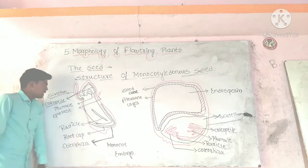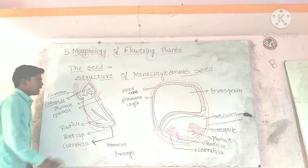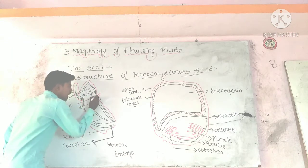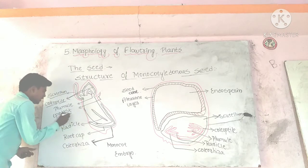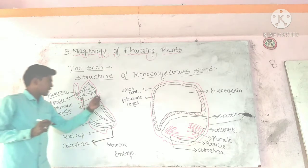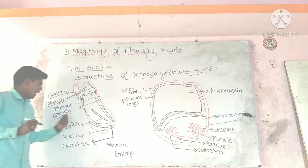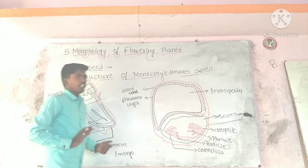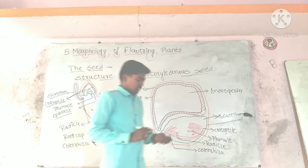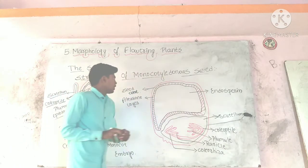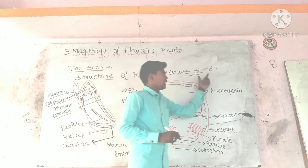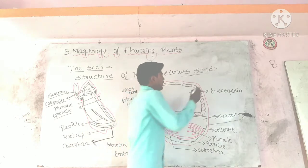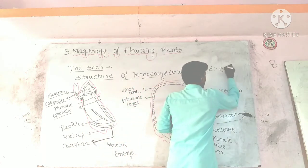In the monocot embryo there is a small extension or outgrowth called epiblast. Now my actual topic is the structure of the monocot embryo. This is a very important question — worth 5 marks in the theory exam.